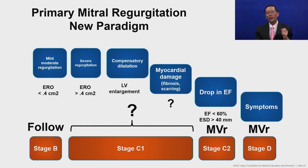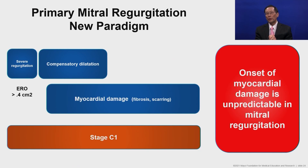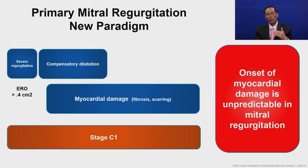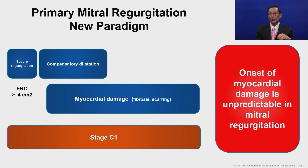Unlike aortic stenosis, myocardial damage in mitral regurgitation is unpredictable, and there are really no parameters to tell us that myocardial damage is occurring. We have been in a quandary as to when to operate on patients with mitral regurgitation who remain asymptomatic, whose ventricular function remains greater than 60%, and whose end-systolic dimension is less than 40 mm.